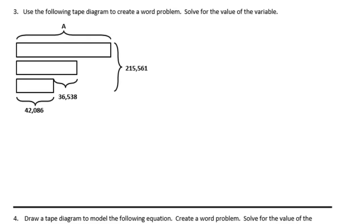Number three: use the following tape diagram to create a word problem and solve for the value of the variable. This time there are no blanks — we do it entirely on our own. A is our variable. These are large numbers, so let's think of something sold in large quantities, like a hardware store.